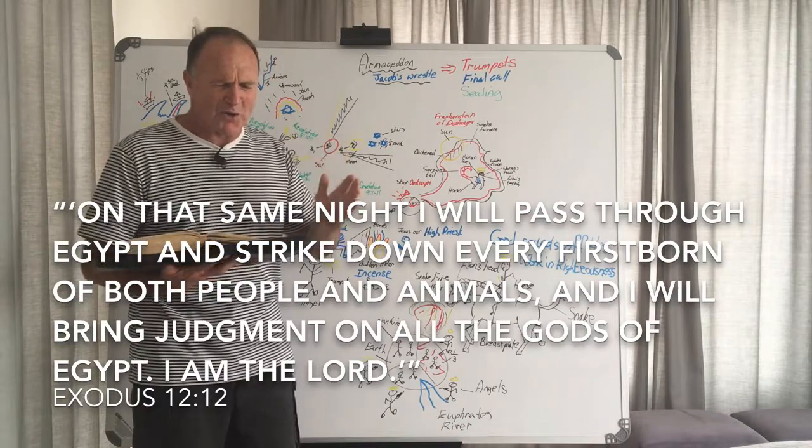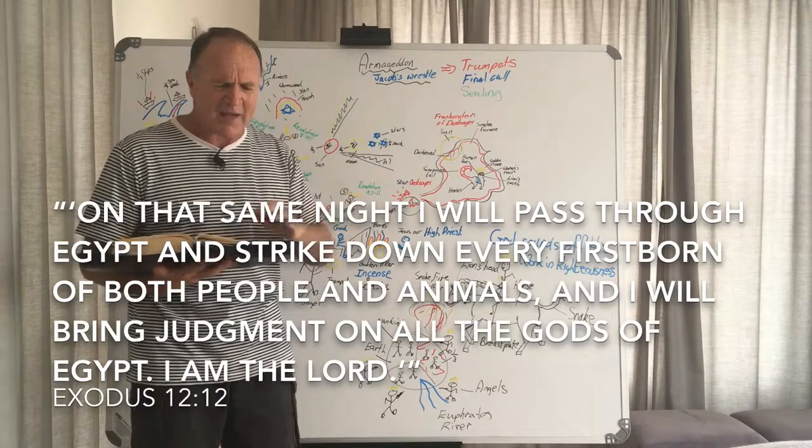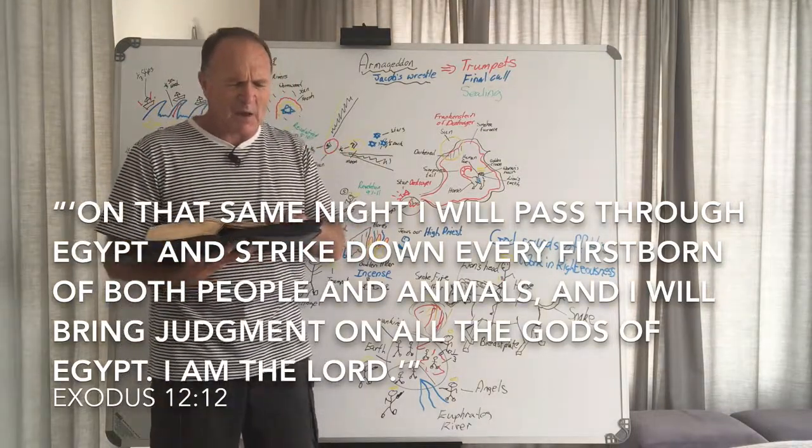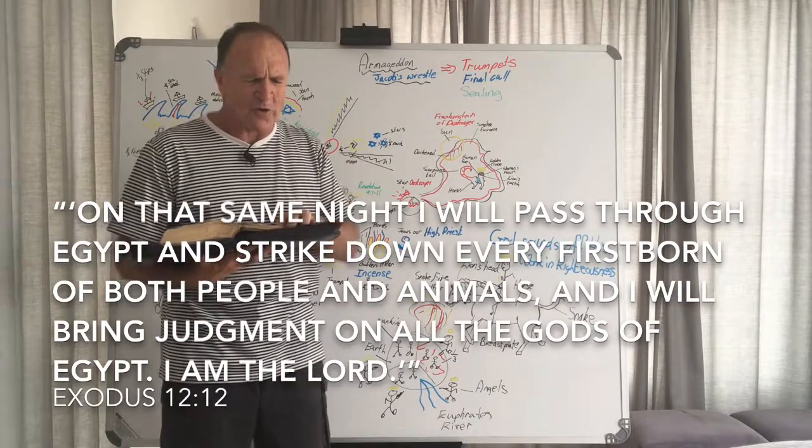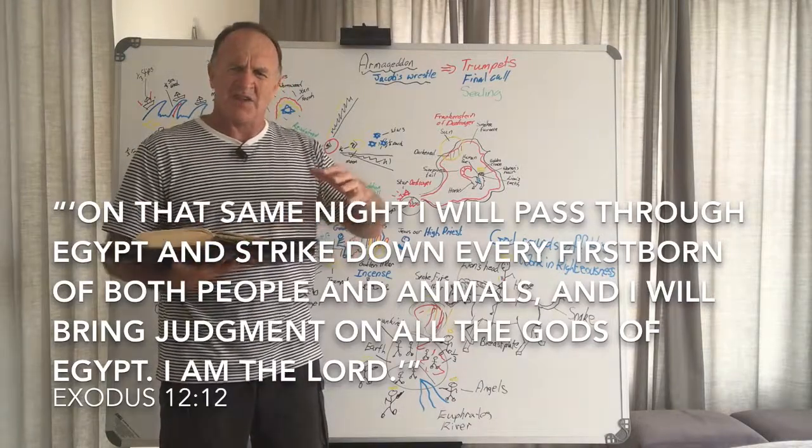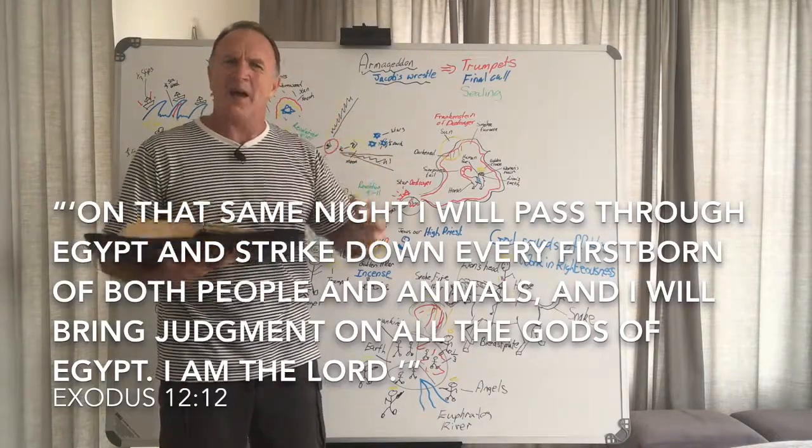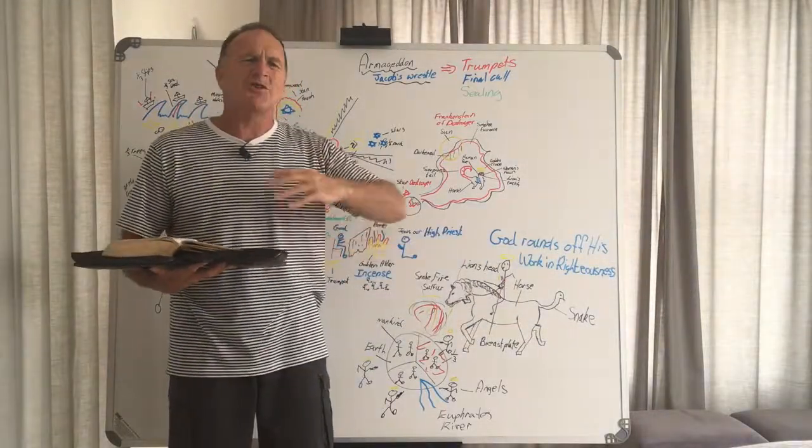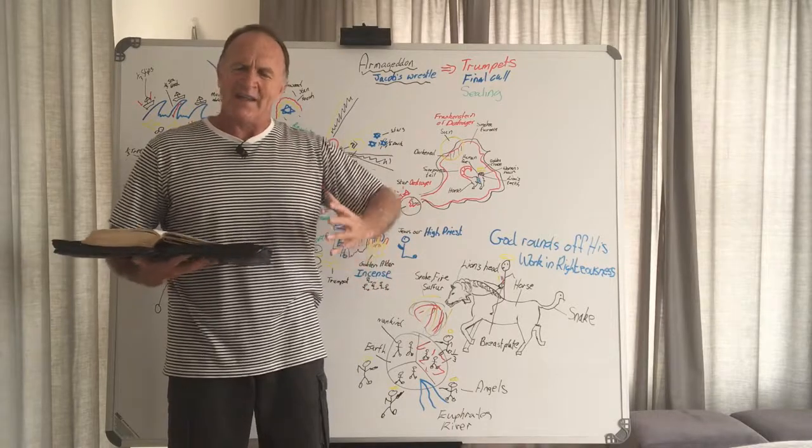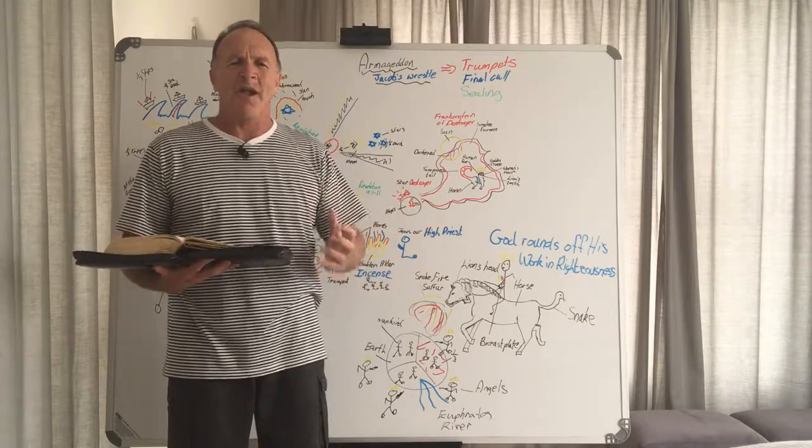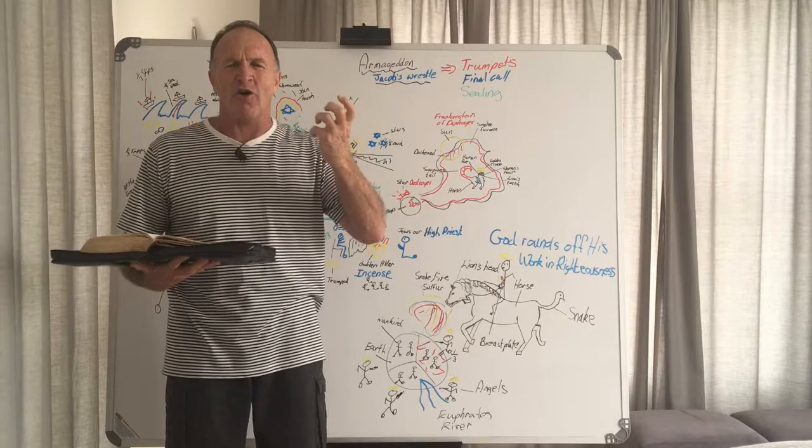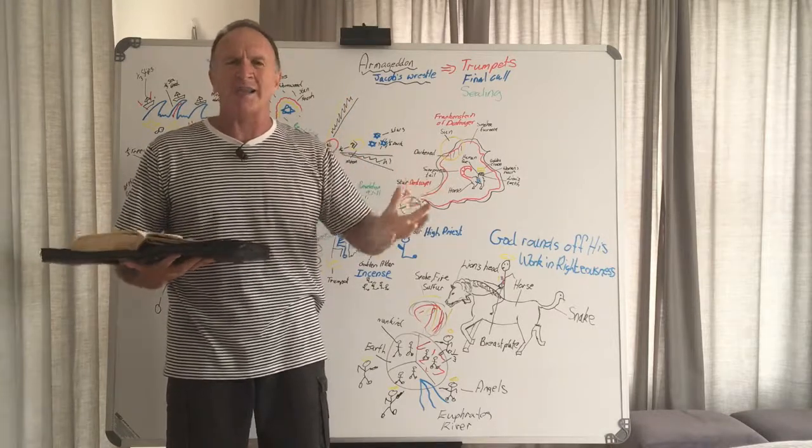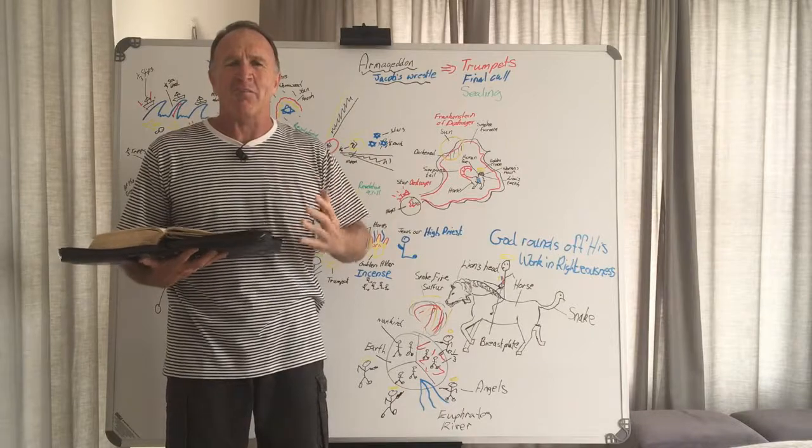He says verse 12, on that same night that you've made your decision, I will pass through Egypt and strike down every firstborn, both men and animals, and I will bring judgment on all the gods of Egypt. He says for I am the Lord. So we see that God is going to come to those people who still have not acknowledged him and is going to display his power in the fact that he says I hold the keys of life and death. No God has power like I have power.